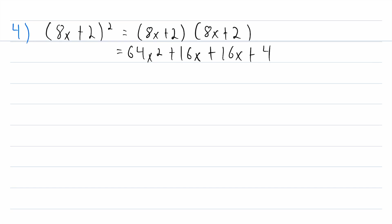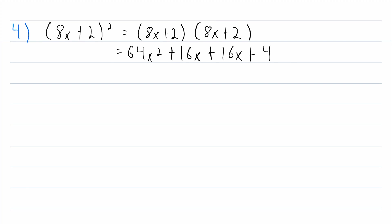Remember with the distributive property, we want to make sure each term in one group gets multiplied by each term in the other group, then we add them all together. Now we just need to add like terms. We only have one x squared term, so we bring that down: 64x squared. We have two x terms — 16x and 16x — add those together to get 32x. And one constant at the end, plus four. So eight x plus two squared equals 64x squared plus 32x plus four.